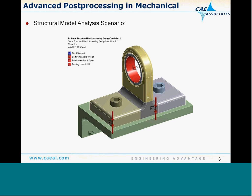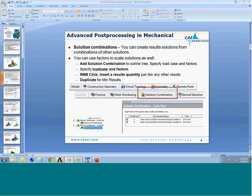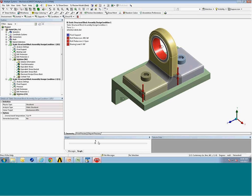The particular model I'll be covering is a structural example. This is a pillow block tied in with a couple of bolts with some bolt preload and two various load cases. One, we have a bearing load inside this bearing race, and then also a secondary load where we apply a pressure on this face. This particular example is structural, but the post-processing techniques we'll show you are very applicable to other analyses as well. So let's go into Mechanical directly.